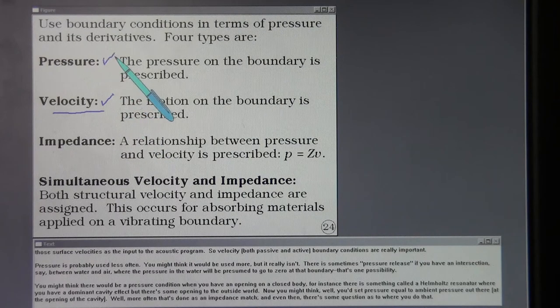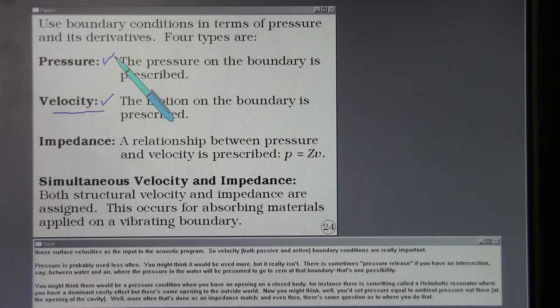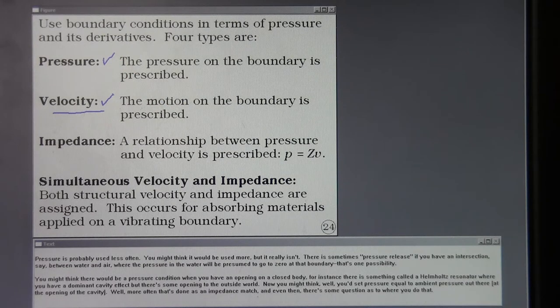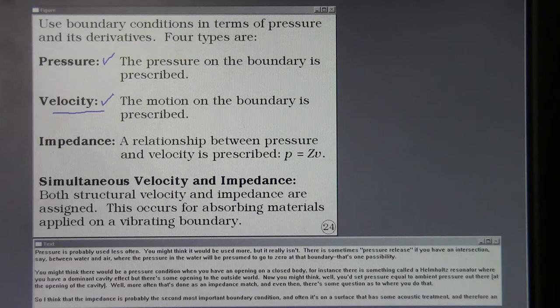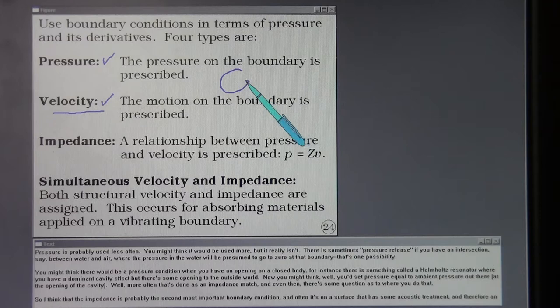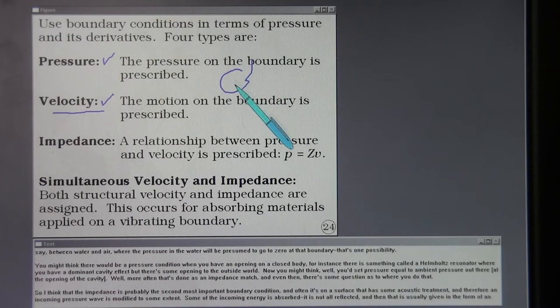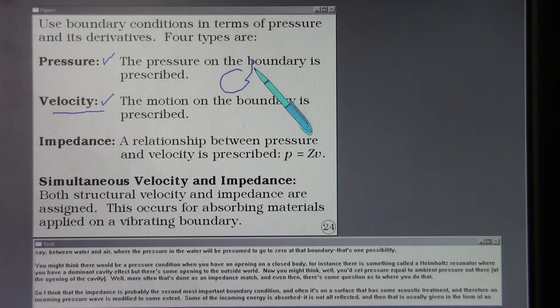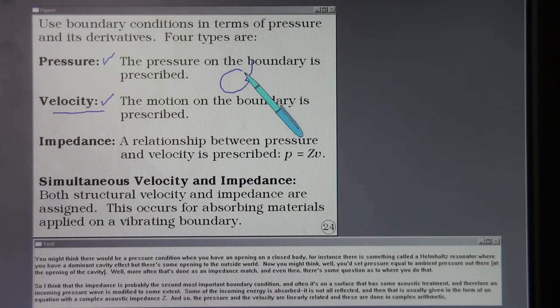Pressure is probably used less often. You might think it would be used more but it really isn't. There's sometimes pressure release if you have an intersection say between water and air where the pressure in the water will be presumed to go to zero at that boundary. You might think there might be a pressure condition when you have an opening on a closed body. For instance there is something called a Helmholtz resonator. We have a dominant cavity effect but there's some opening to the outside world. You might think well you'd set pressure equal to ambient pressure out there. Well more often that's done as an impedance match.